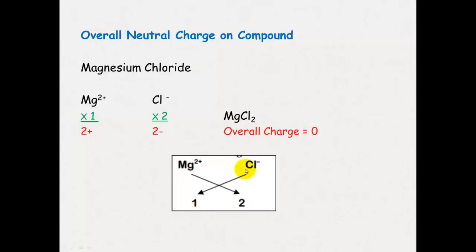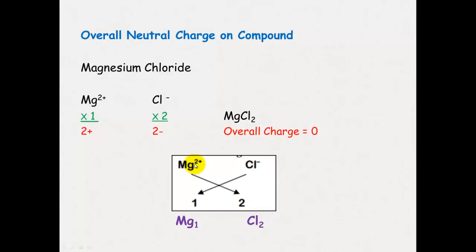The cross method is an easy way of establishing what charges you need. Look at the valency on the opposite ion — that tells you how many you need. For magnesium chloride: there's a 1 on the chloride, so you need one magnesium; and there's a 2+ on the magnesium, so you need two chloride ions.